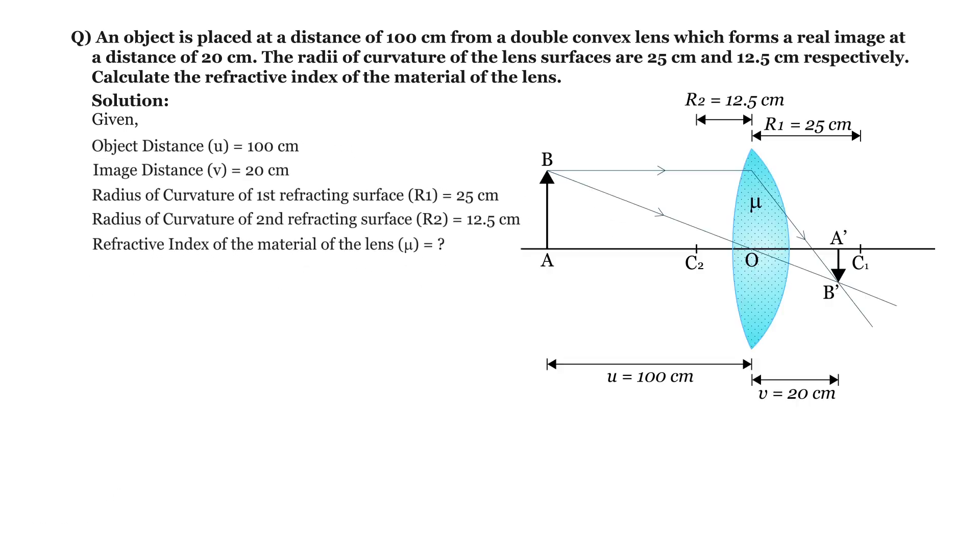Now let's draw a diagram. AB represents the object, u represents object distance. A dash B dash represents the image, v represents image distance. C1 and C2 represent centers of curvature, and R1 and R2 represent radii of curvature of the lens.